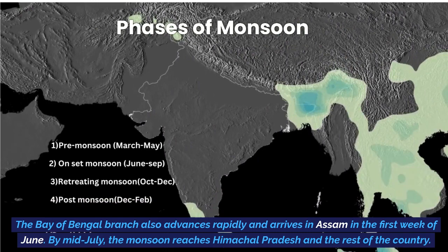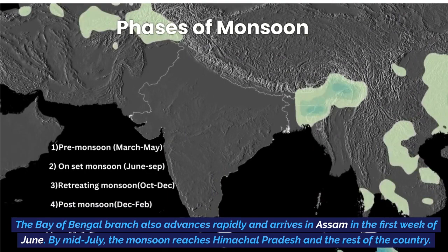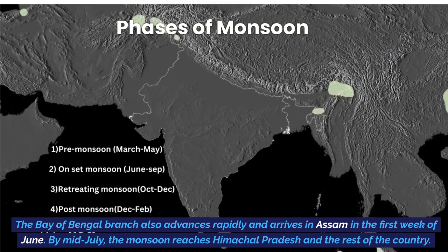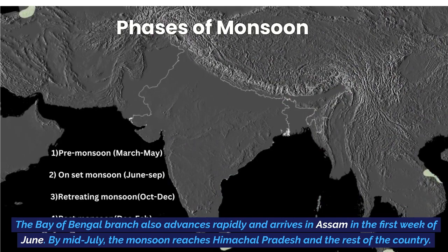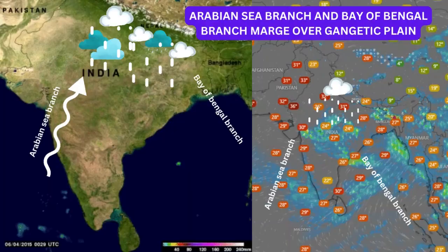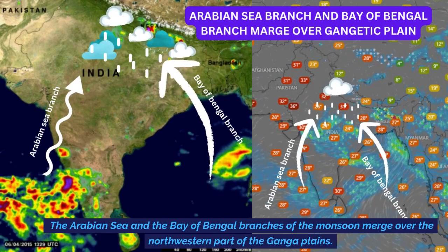In this diagram we have shown the phases of the monsoon. The first one is pre-monsoon: the months of March to May, which is known as summer season. The second one is onset monsoon: the months of June to September, which is known as the rainy season. The third one is retreating monsoon: the months of October to December, which is the autumn season and early winter. The fourth one is post-monsoon: the months of December to February, which is known as the winter season.